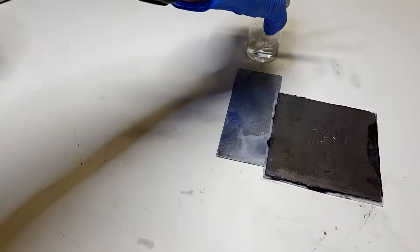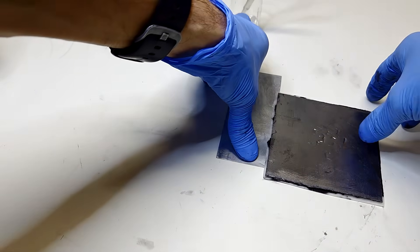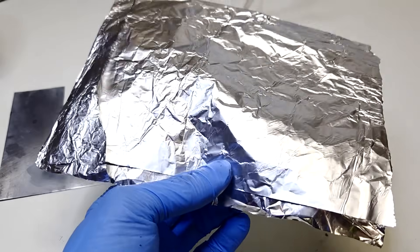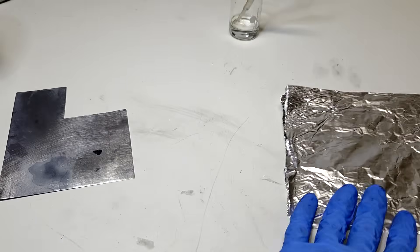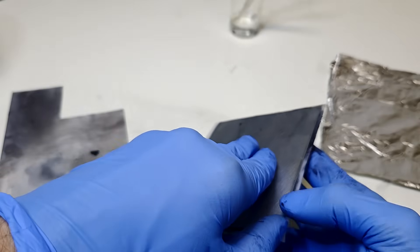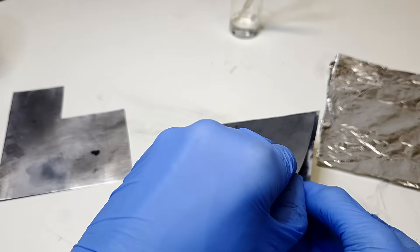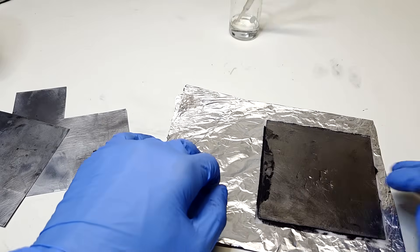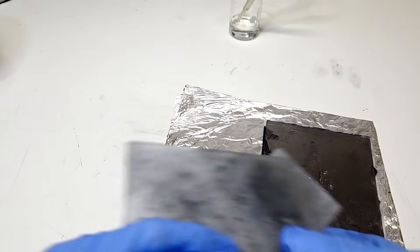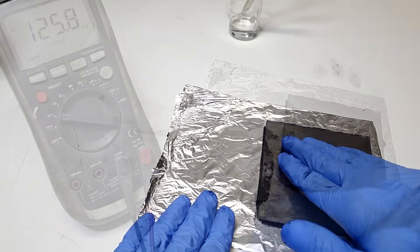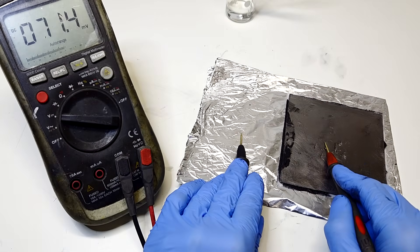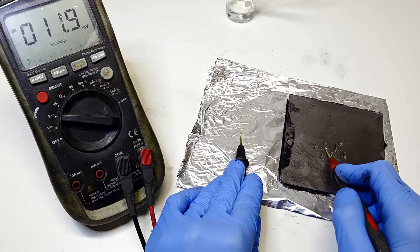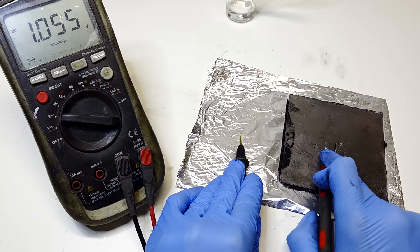And now what I can do is I can also replace the zinc anode with aluminum foil, like this one here. I have some kitchen foil to make a homemade aluminum battery.